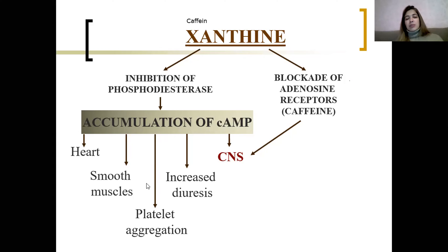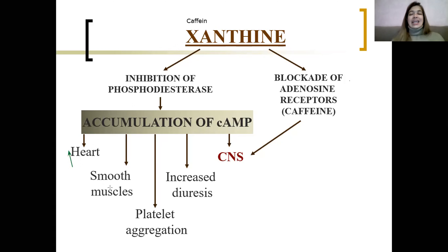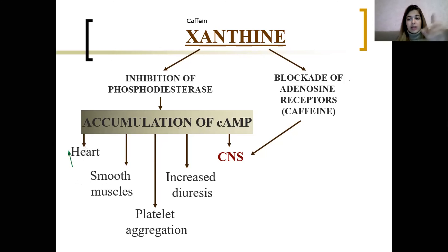cAMP plays different roles depending on the cell type. In the heart, in myocytes, accumulation of cAMP gives a stimulating effect — increasing heart rate and heart power. In smooth muscles, accumulation of cAMP leads to reduced calcium. So in the heart there will be more calcium ions and more contraction; in smooth muscles there will be less calcium ions, leading to relaxation.